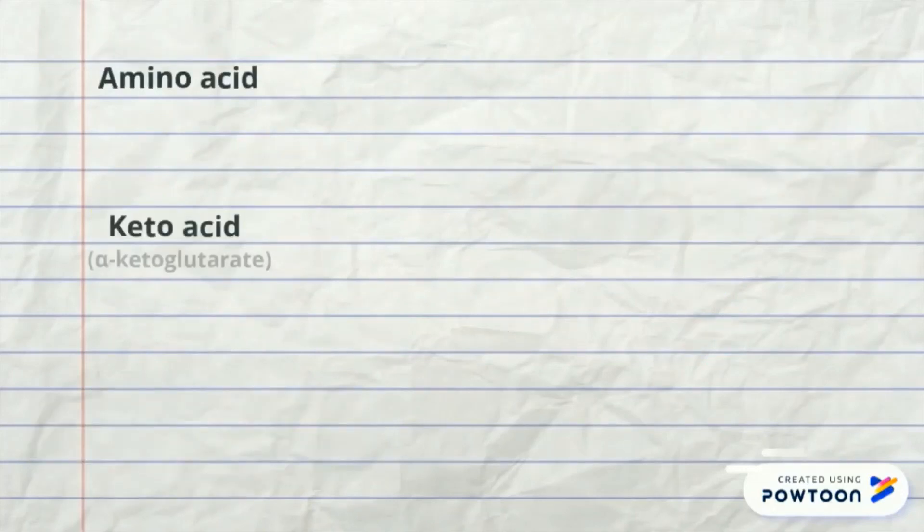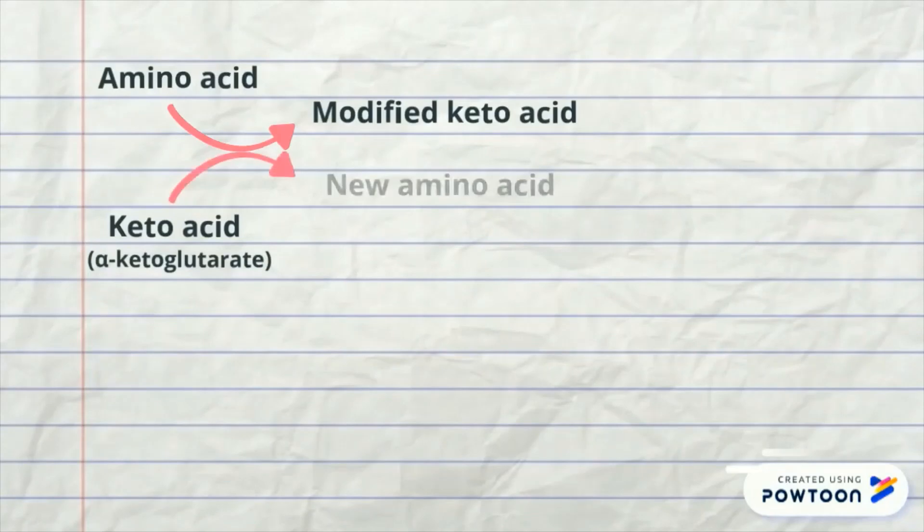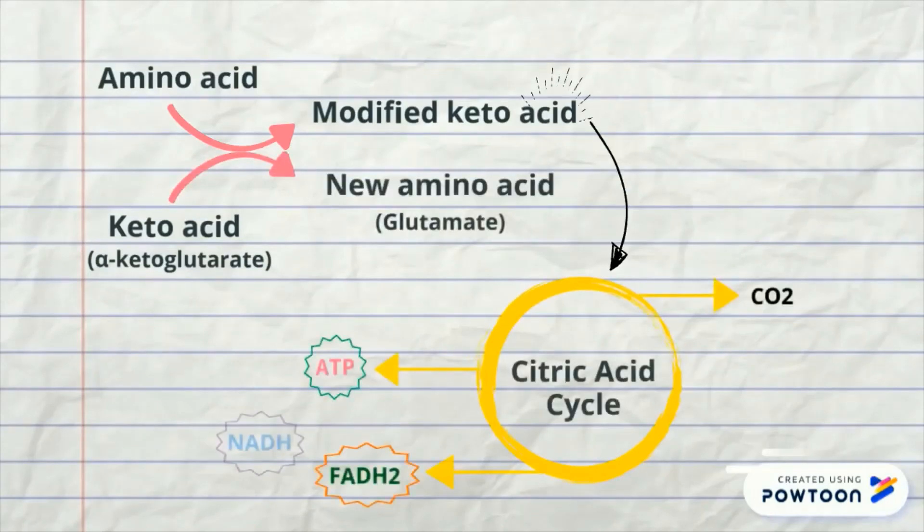However, during protein metabolism, amino acid produced reacts with alpha-ketoglutarate, producing modified ketoacid and glutamate. The modified ketoacid may enter directly into Krebs cycle as acetyl-CoA, alpha-ketoglutarate or succinyl-CoA.